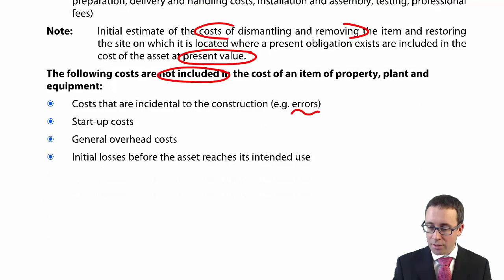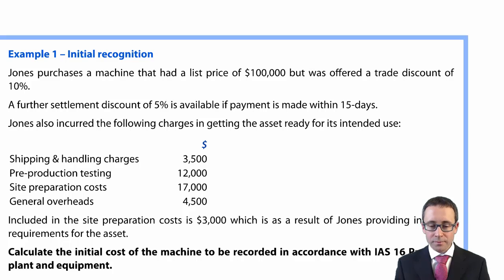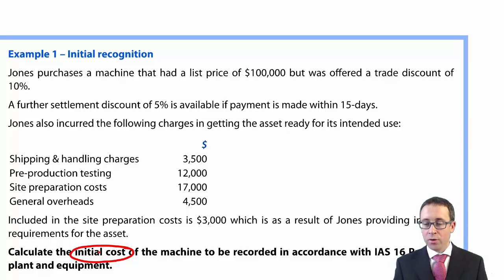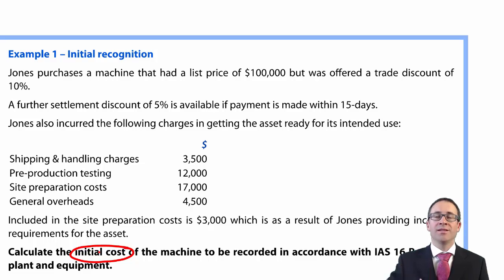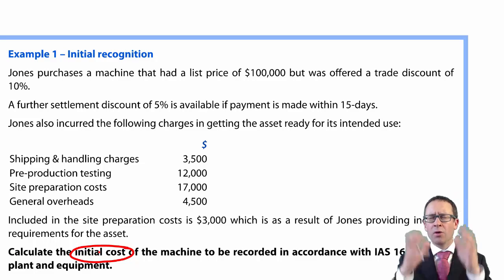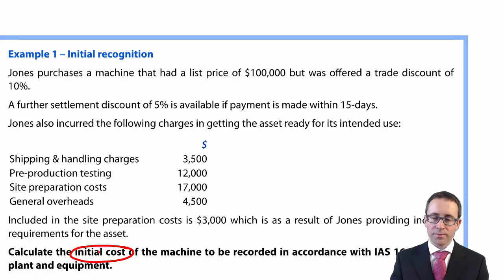Let's look at a brief example. Calculate the initial cost of the machine to be recorded in accordance with IAS 16 property, plant and equipment. You're looking at purchase price plus any irrecoverable taxes, net of any trade discounts, plus any directly attributable costs of getting the asset into its location and condition, ready to be used as management intended.